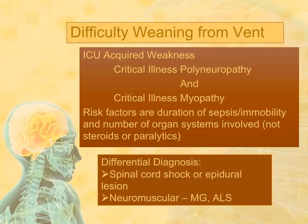Very commonly, those weaknesses are evidence of ICU-acquired weakness, most likely related to what's termed either critical illness polyneuropathy or critical illness myopathy. They frequently occur together, and so it's sometimes almost academic to distinguish one from the other. The risk factors include duration of sepsis, immobility, and the number of organ systems involved. Previously, steroid usage and use of paralytics were thought to be risk factors, but that has more recently been questioned.